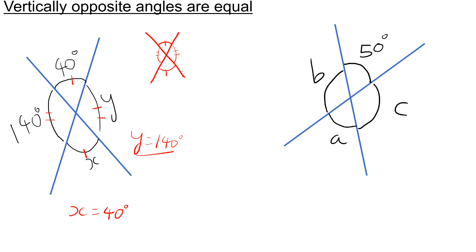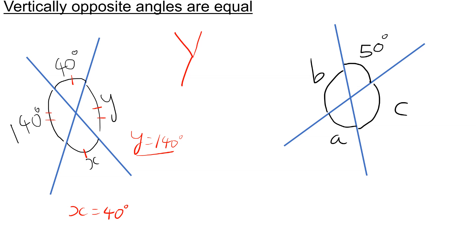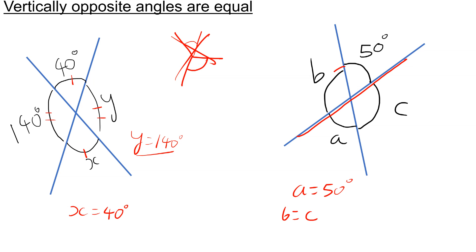Remember, this only works if you have two straight lines that cross. You couldn't use this property if you just draw a straight line with a sort of bend — you couldn't say that one angle equals another. If you look at the second question, A needs to be 50 degrees. B and C are equal to each other. There's a straight line, so to get B we do 180 take away 50, which is 130. And C is opposite to this, so C is also 130 degrees.